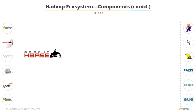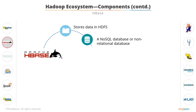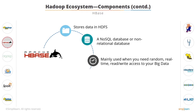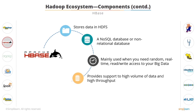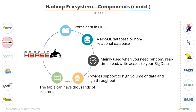What stores data in HDFS? It is HBase, which stores data in HDFS. HBase is a NoSQL, or non-relational, database. It is mainly used when you need random, real-time read or write access to your big data. It provides support for high volumes of data and high throughput. In an HBase table, a table can have thousands of columns.